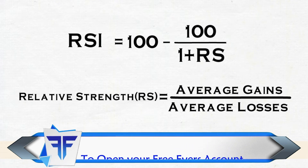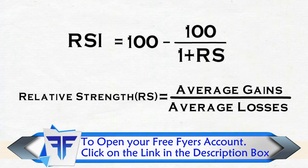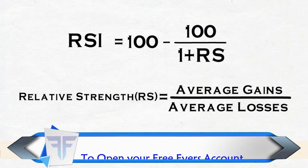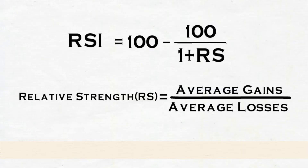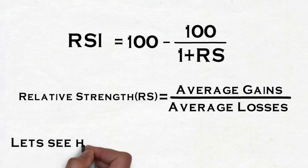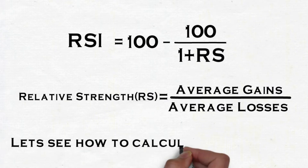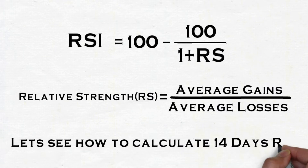Generally, traders start with 14-period data. Most trading platforms are set up with 14 periods by default. So to calculate RSI, we should take 14 days' closing prices of the script. Let's see how this is calculated.